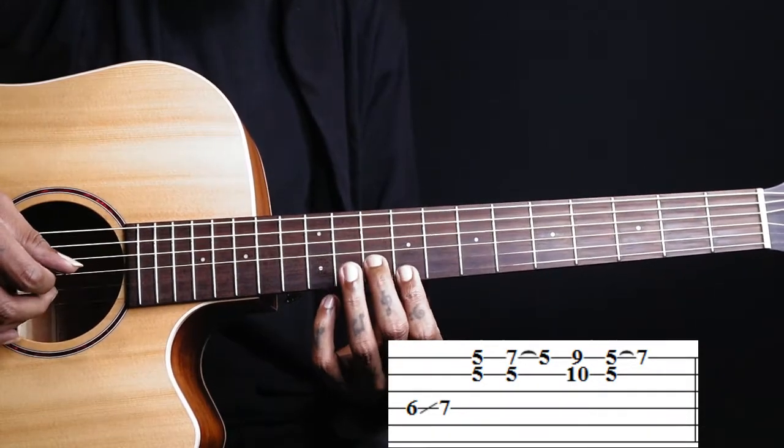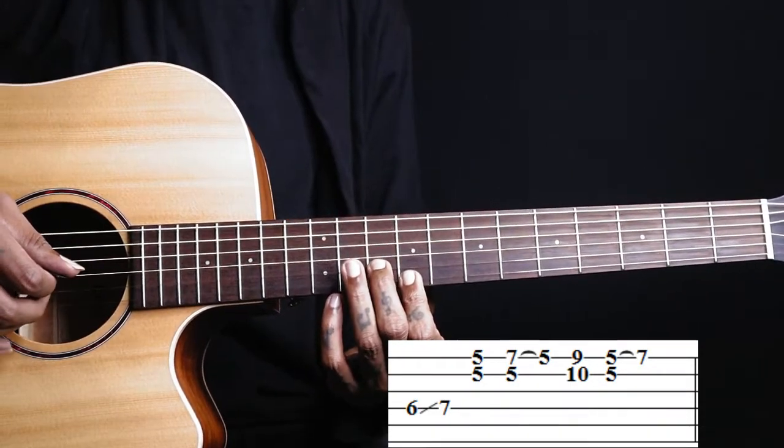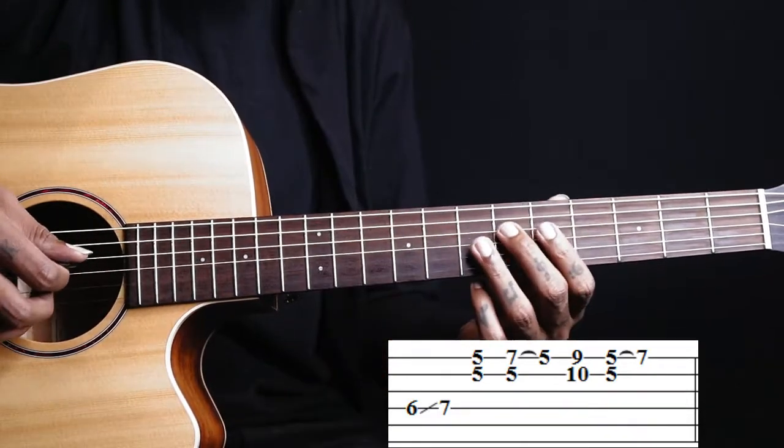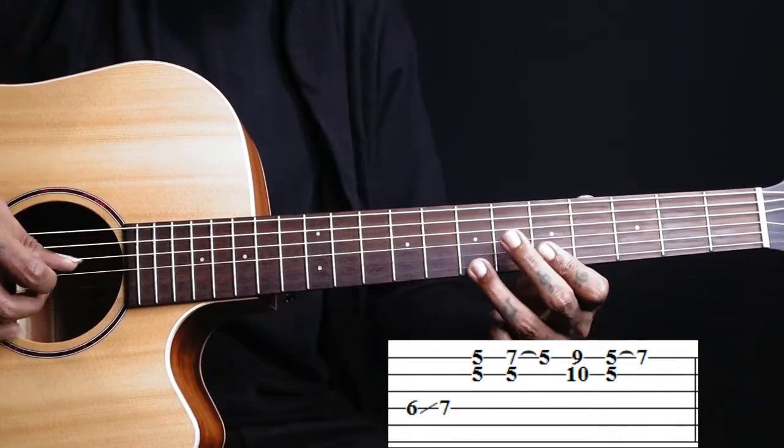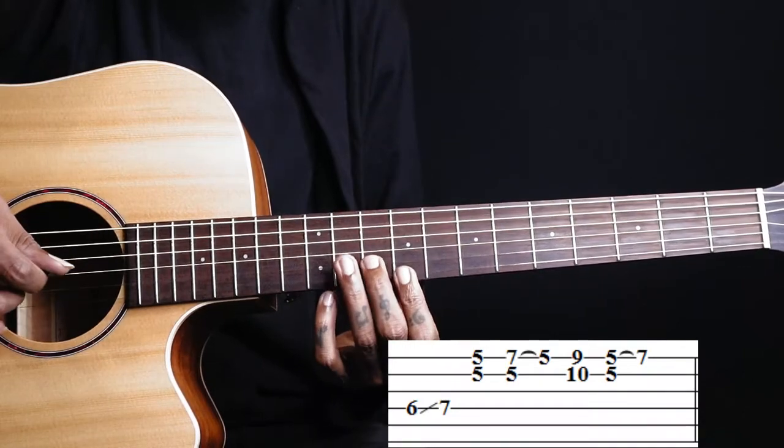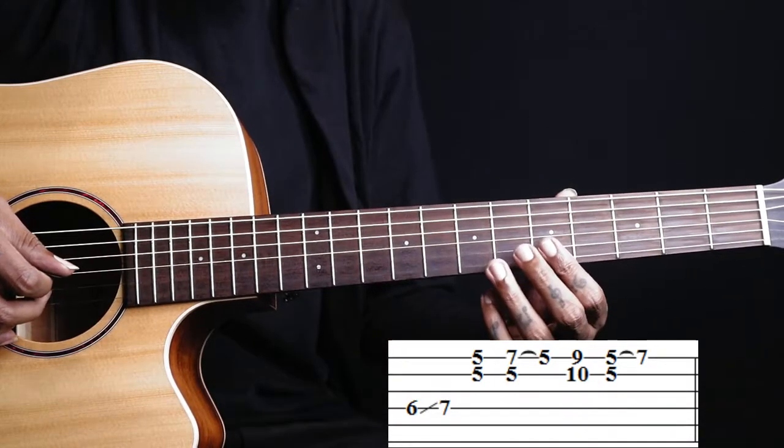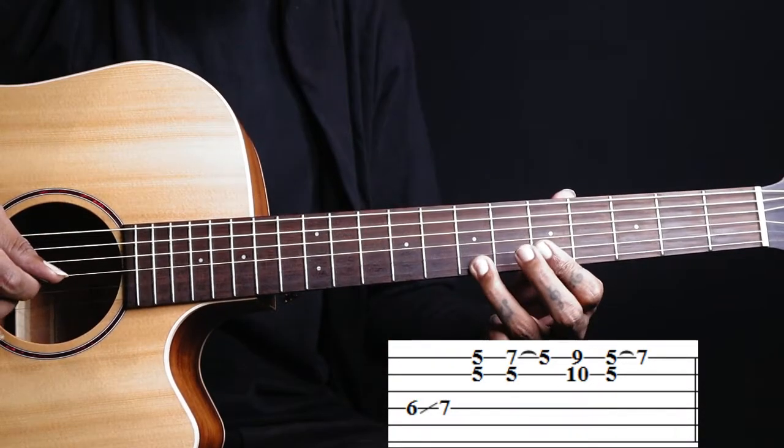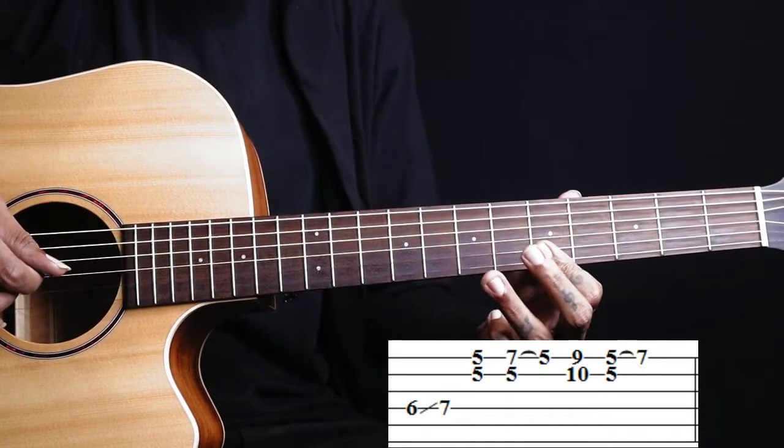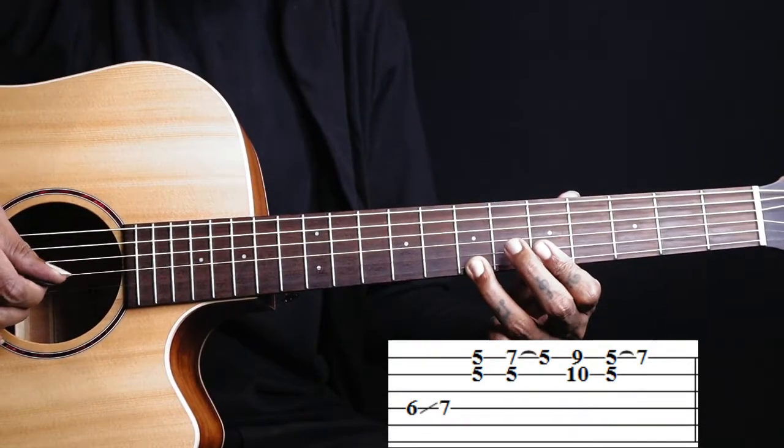On the first string, and we play again both first and second string together. Then we come back to this fifth fret, we play both strings together and hammer on the seventh fret.